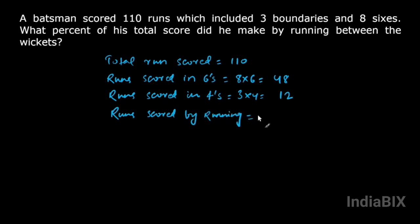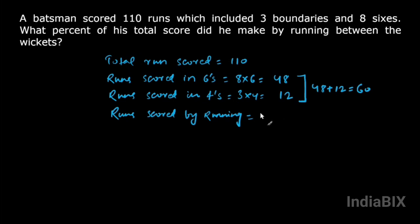Runs scored by running between the wickets equals total runs scored minus runs scored by boundaries. Runs scored by boundaries is 48 plus 12, which is 60. So runs scored by running will be 110 minus 60, which is equal to 50.